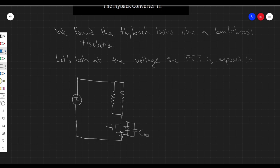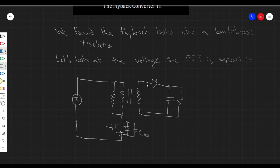So we have the flyback. We have our magnetizing inductance with the primary winding and our MOSFET. I'm going to include both the body diode, which is always there for power FETs, and the output capacitance — let's call it COSS, as it's labeled in the datasheet — with source, drain, and all that. This is connected to the secondary side where we have a diode and the output.